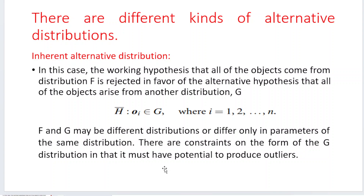There are three different kinds of alternative distribution functions. The first is the inherent alternative distribution function. Here, the working hypothesis that all objects come from distribution F is rejected in favor of the alternative hypothesis that all objects arise from another distribution model G, represented as H-bar, where object i belongs to G for i equal to 1 to N. F and G can be different distribution functions and they differ only in the parameters of the same distribution.